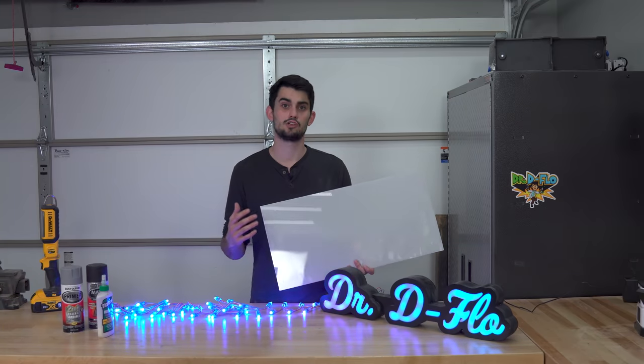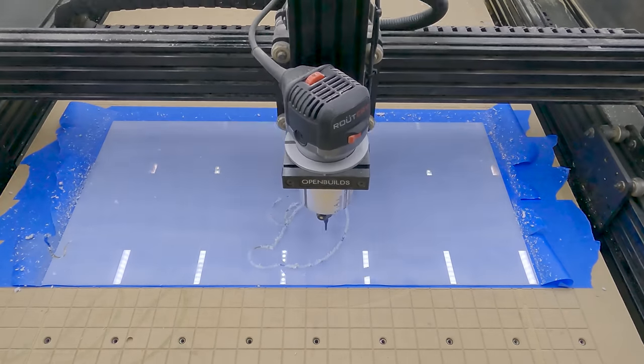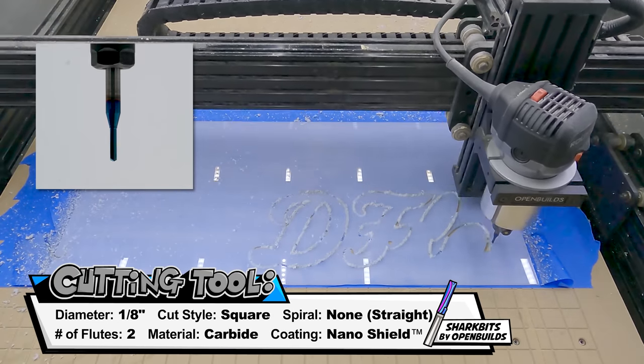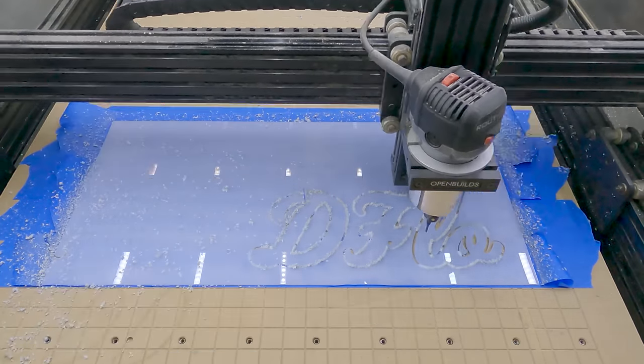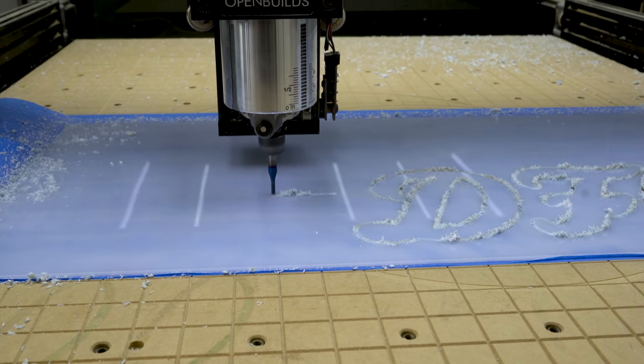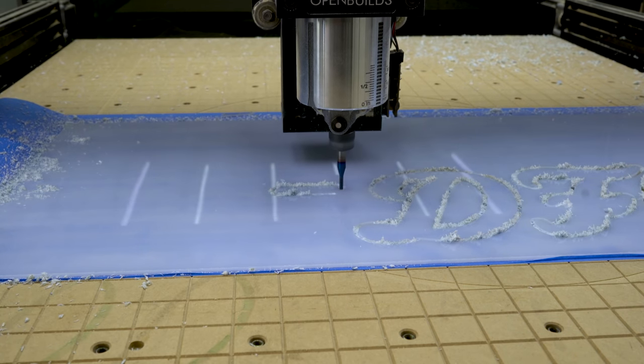Next, I need to cut that translucent acrylic. There are a lot of internal pieces so I used the super glue and painters tape method for work holding. I used a 1/8 inch straight cutter which leaves a nice clean edge when cutting acrylic.